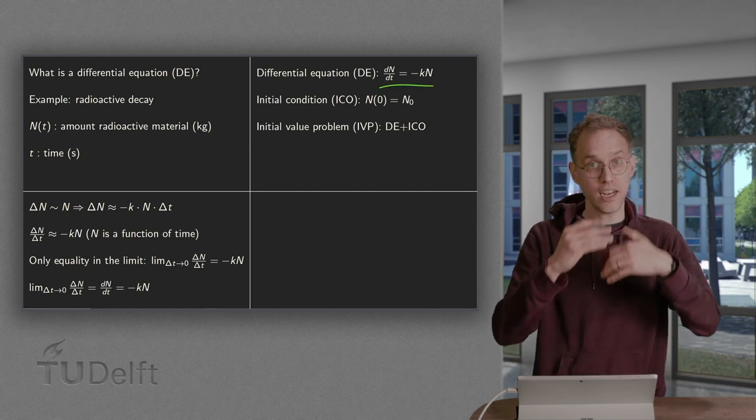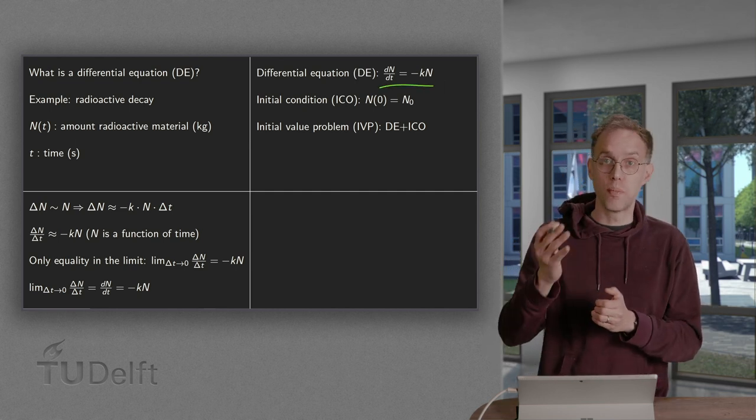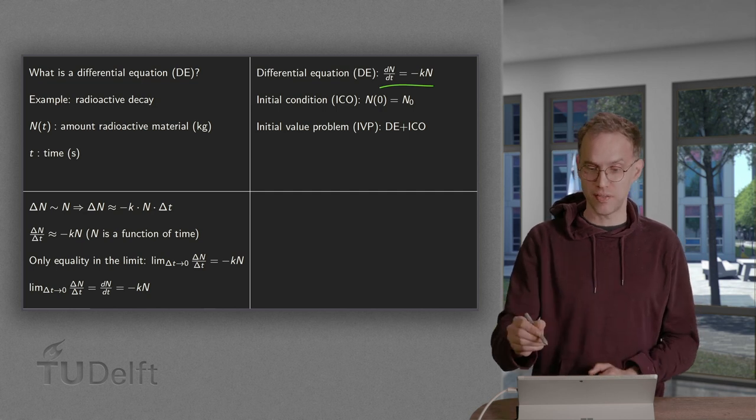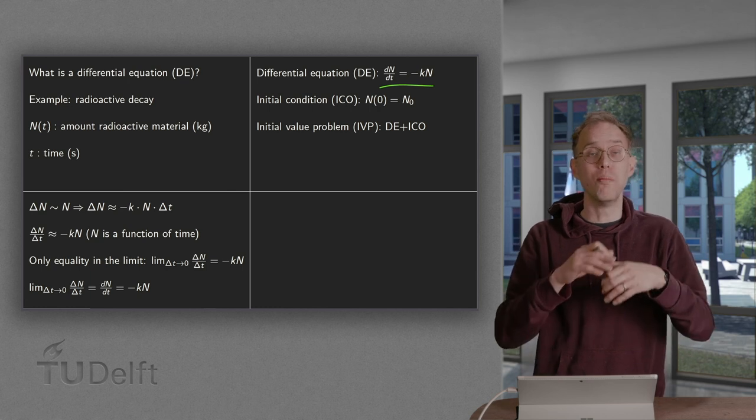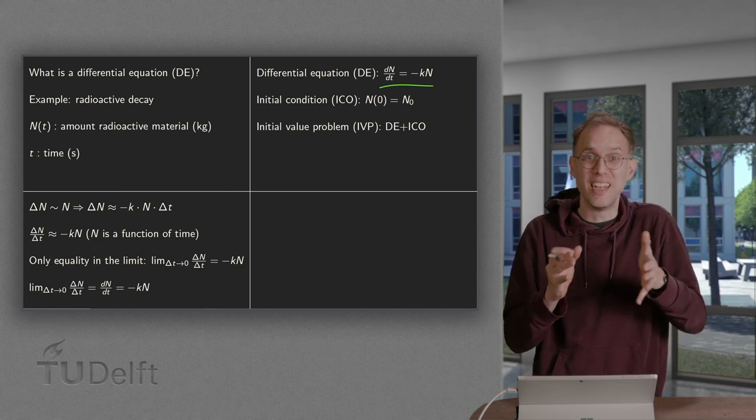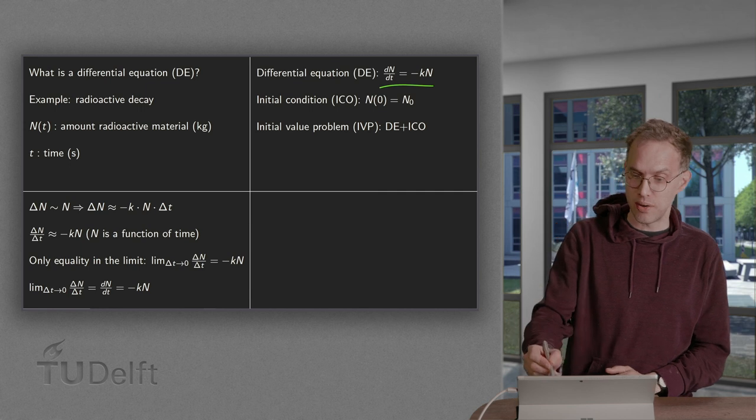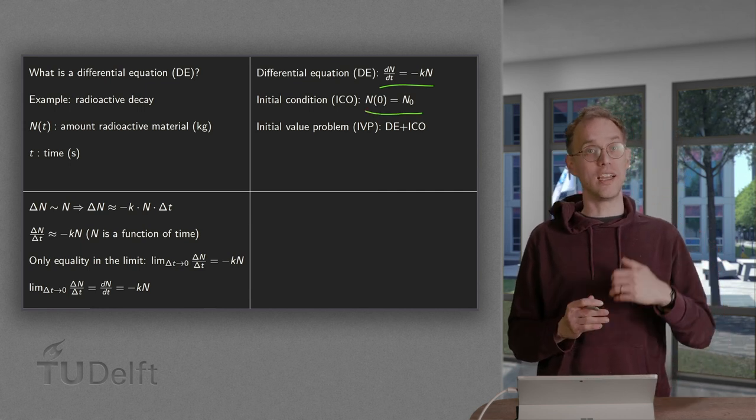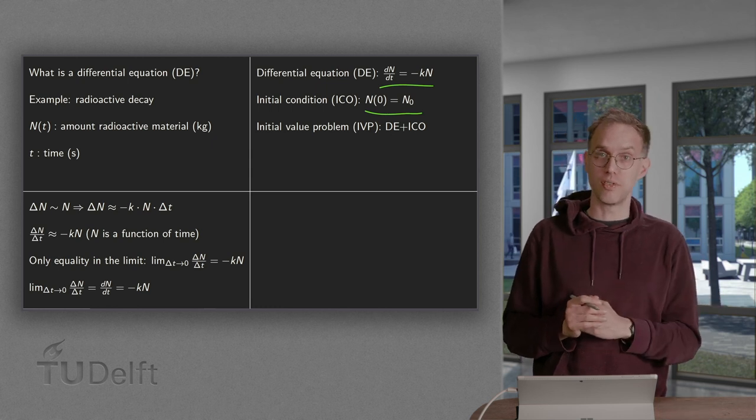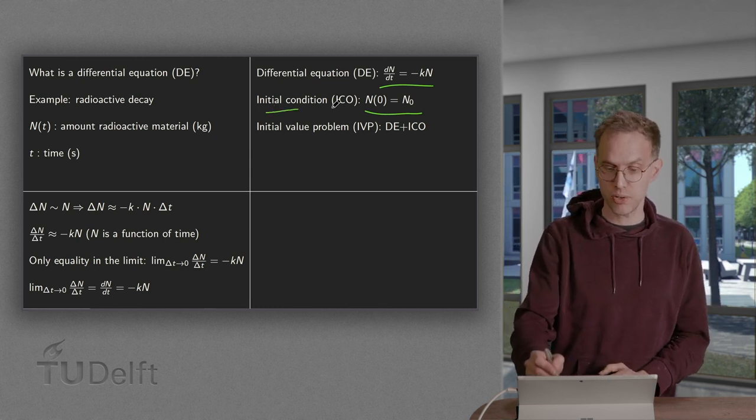So there we have what we call our differential equation. dN/dt, so the rate of change of N, is in this case proportional to N itself. Now, in order to fully specify the problem, we need to specify how much we have initially. We need some initial condition. So we tell how much of the radioactive quantity there is at time zero. That's what we call our initial condition.